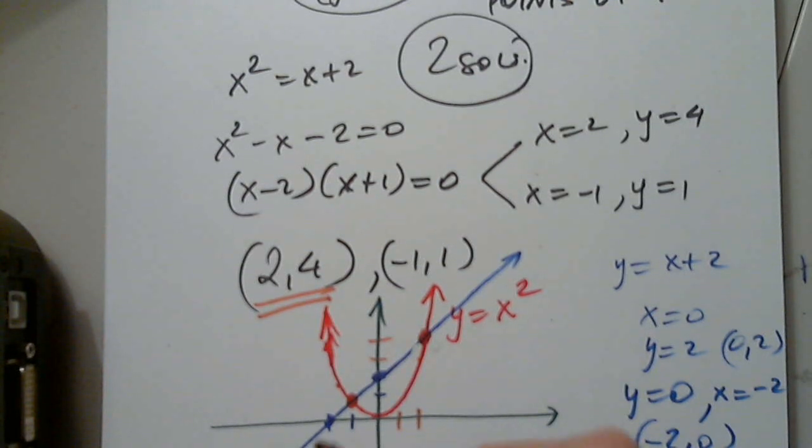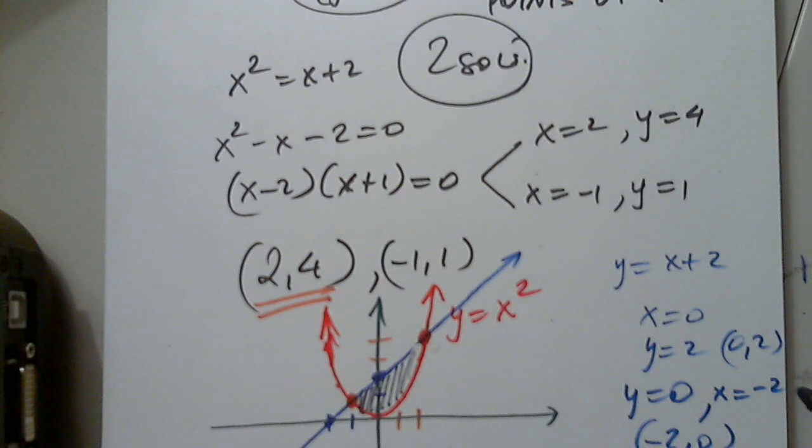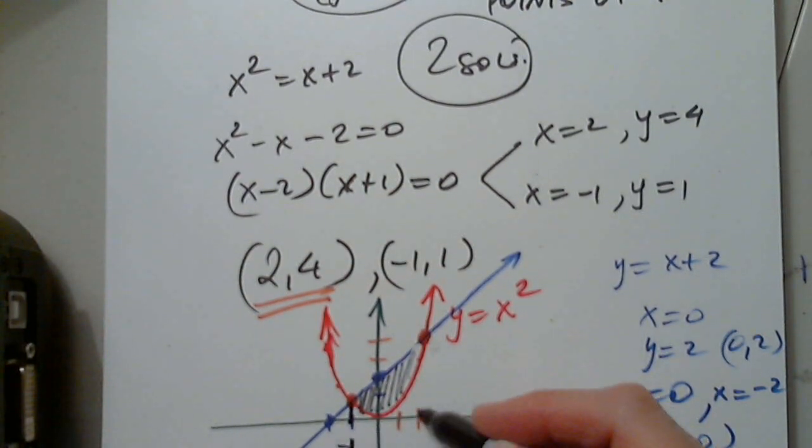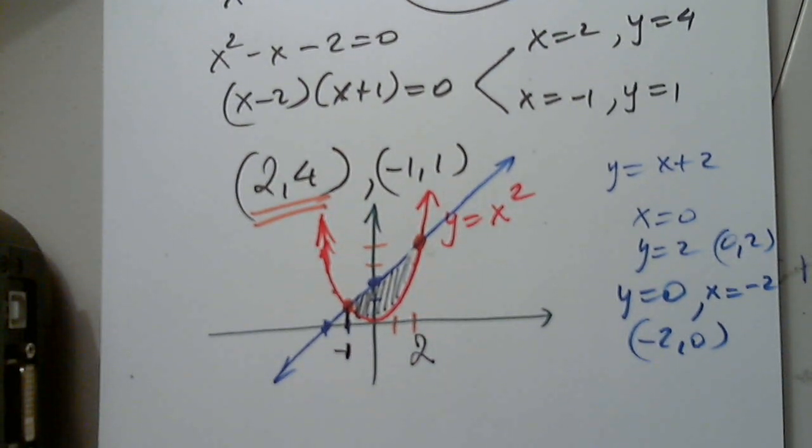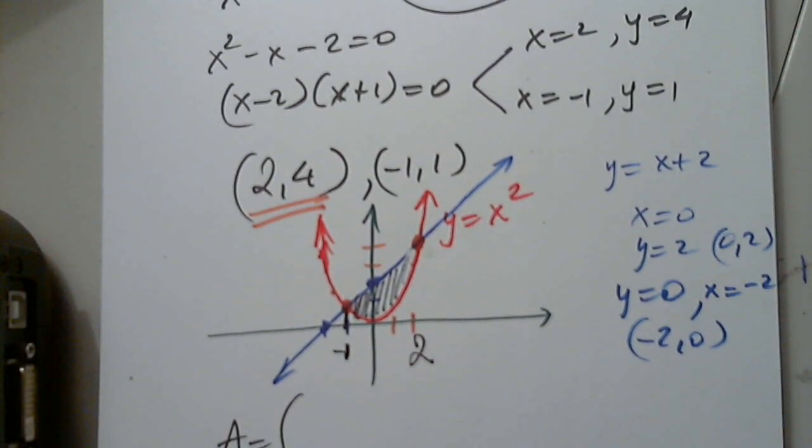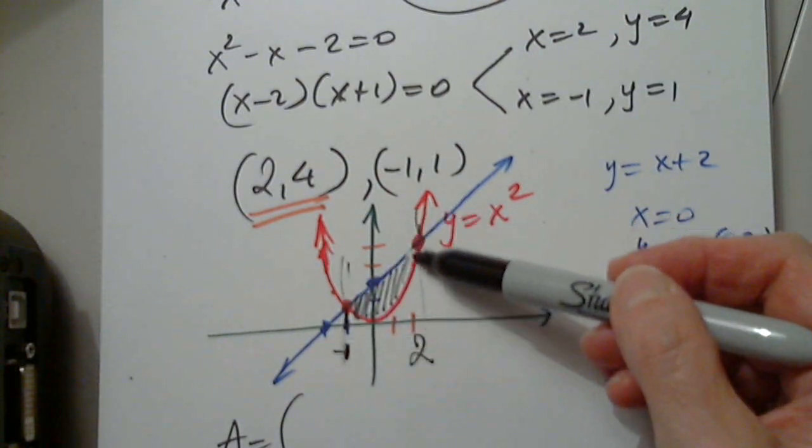So, we see the area that is enclosed. We will shade it in. And we will determine it. It's between negative 1, right here, and positive 2, right here. So, we know that in order to find the area, it's the integral, the definite integral between negative 1 and positive 2.